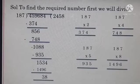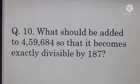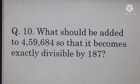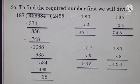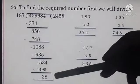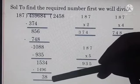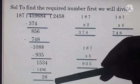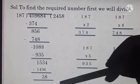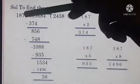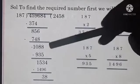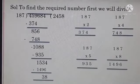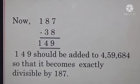The question was what should be added so that it's exactly divisible by 187. Now the remainder is 38. If there was no remainder, then it would be exactly divisible by 187. We need to find the difference between 187 and 38.